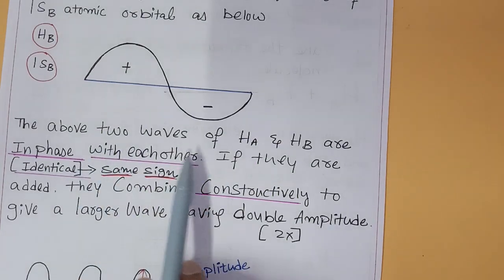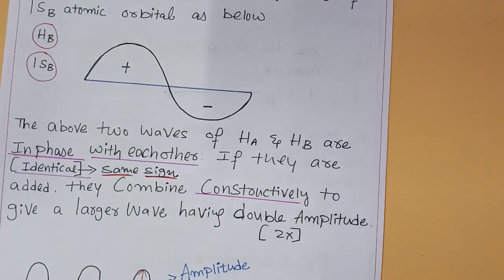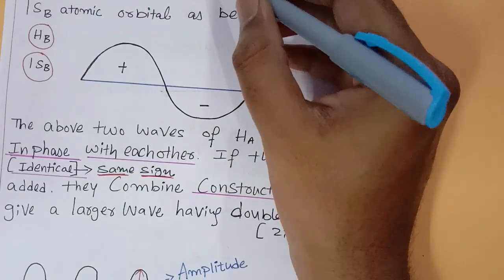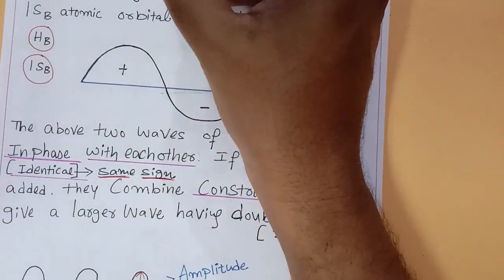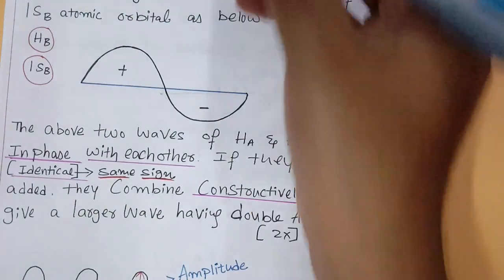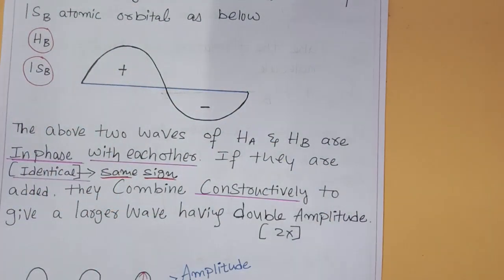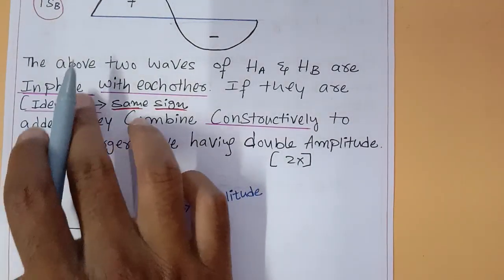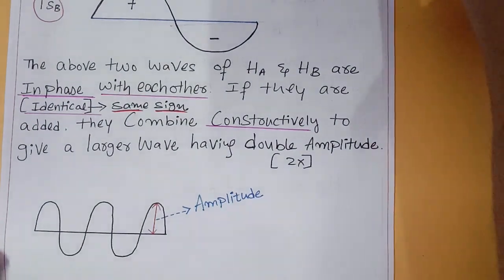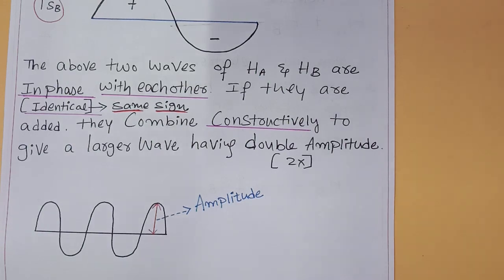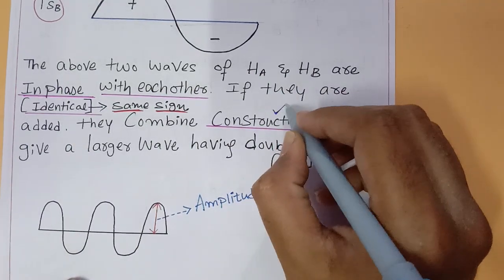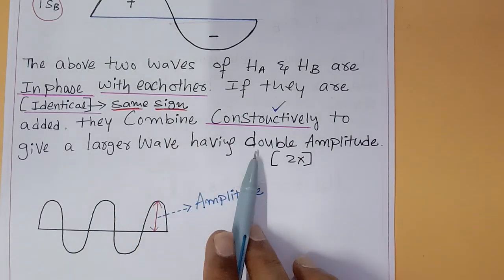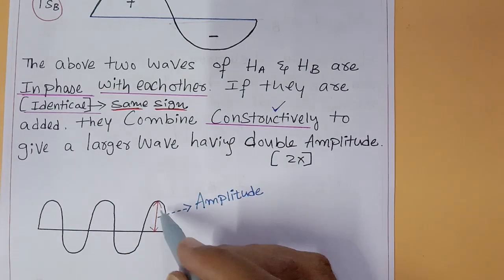The above two waves of hydrogen atom A and hydrogen atom B are in phase with each other. In phase means same sign — top is plus and bottom is minus. The 1s electron wave of hydrogen atom A and the 1s electron wave of hydrogen atom B are the same. Overlapping in phase means identical sign. These two waves combine constructively, generating a large wave with high amplitude.